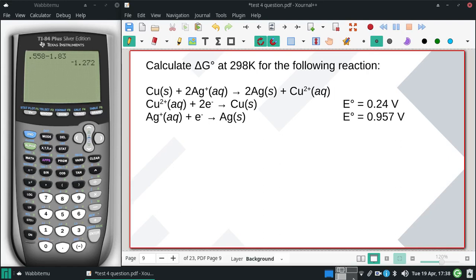Calculate delta G at 298K for the following reaction. All right, so we are having copper solid here. So because of that, this first one is my anode.